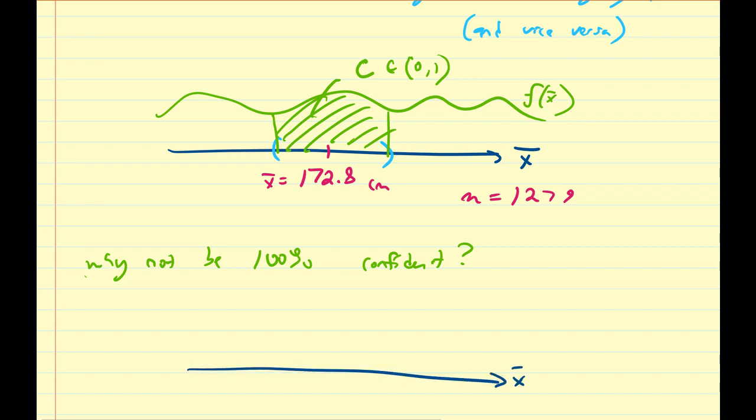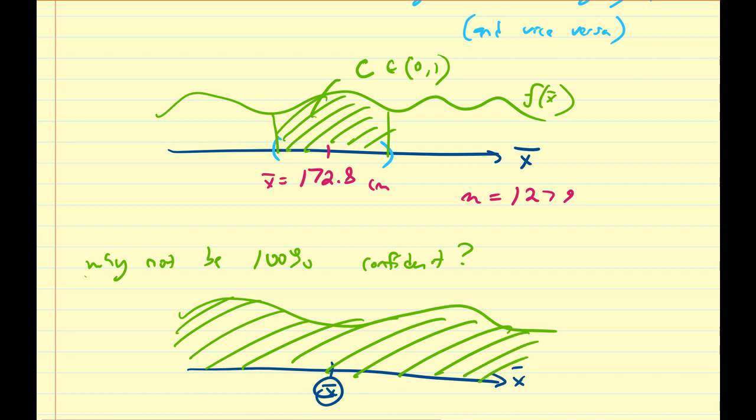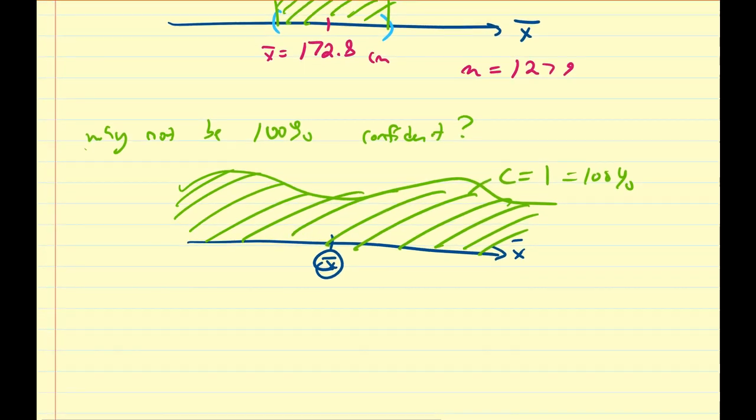So why not be 100% confident? I'm pretty sure everyone has heard the statements about being overconfident in something. So here's our x̄ value that we have in our sample. 100% confident means we're going to cover everything here. So this is c equals 1, or 100%. But what we're saying here is we're 100% confident that the mean is going to be between minus infinity and infinity.